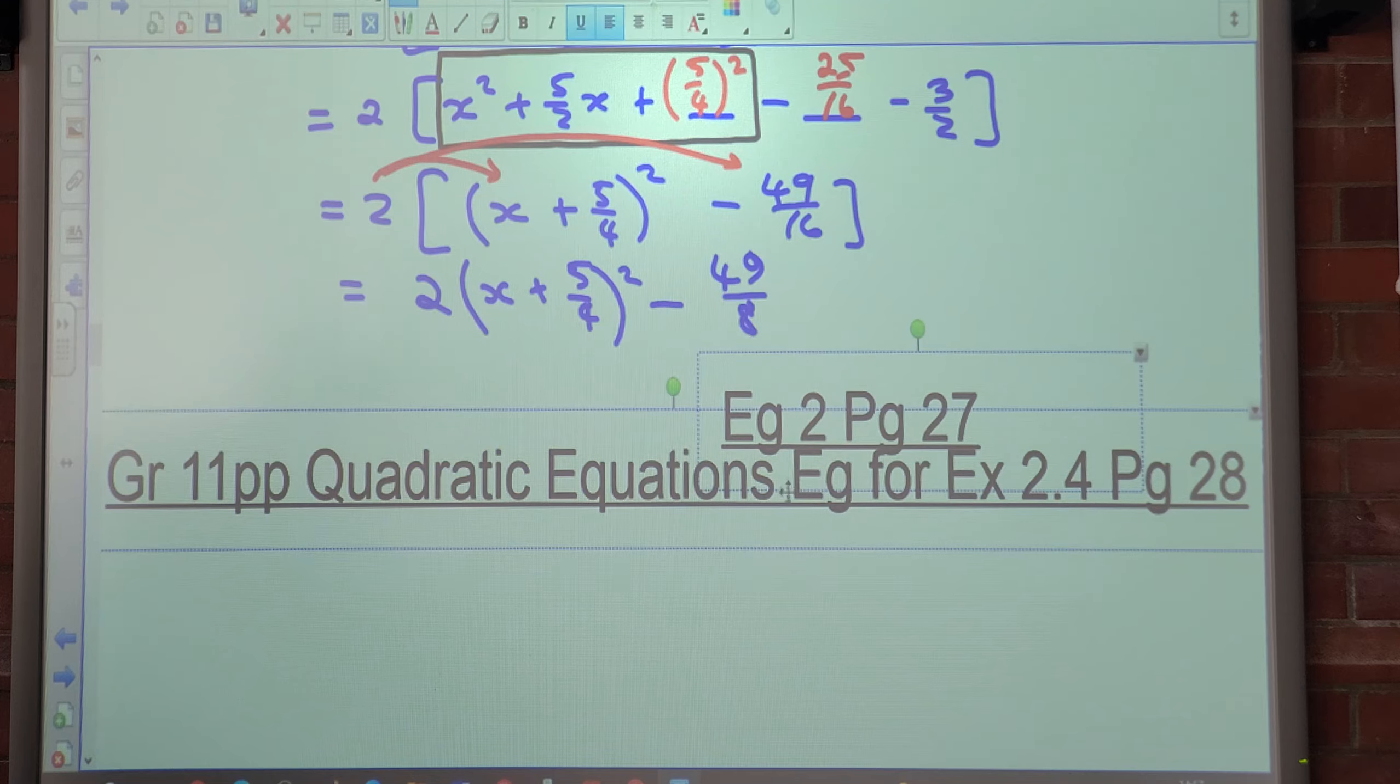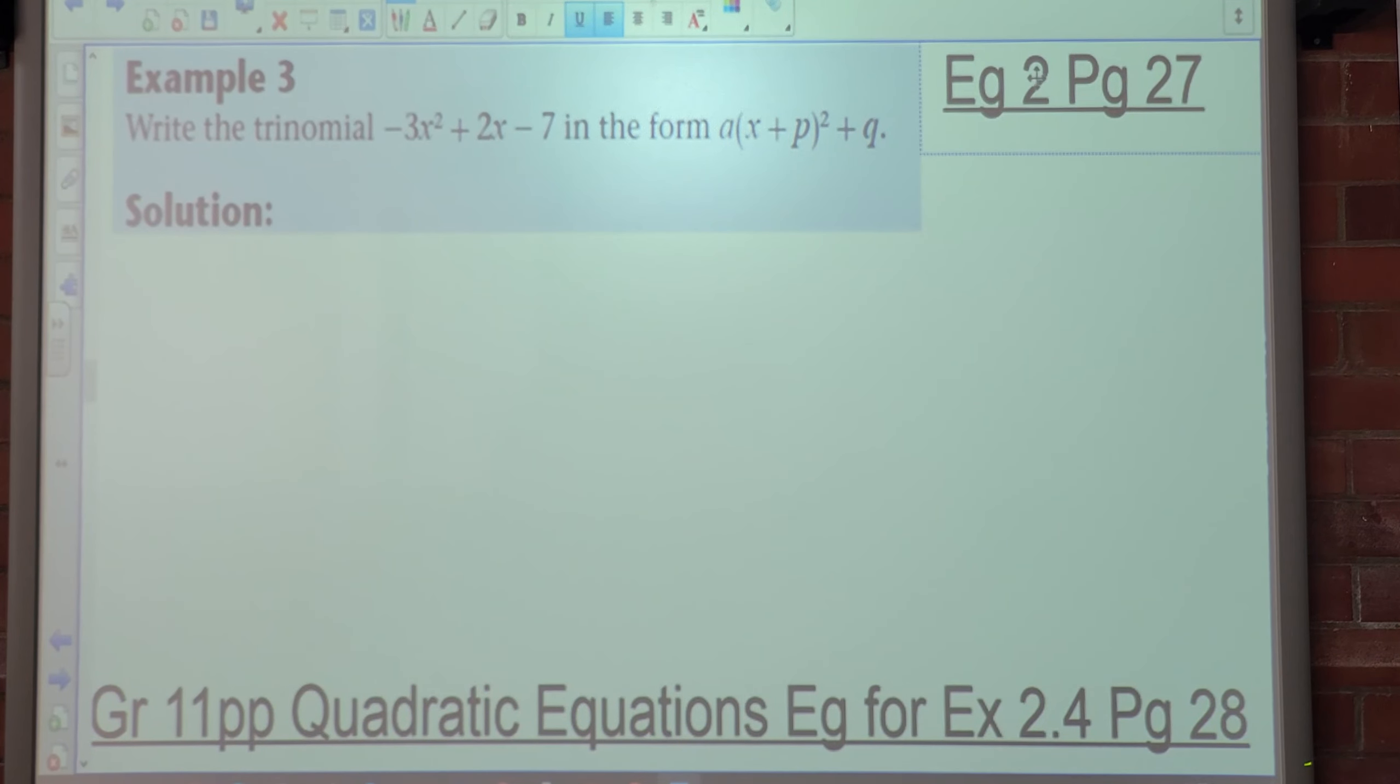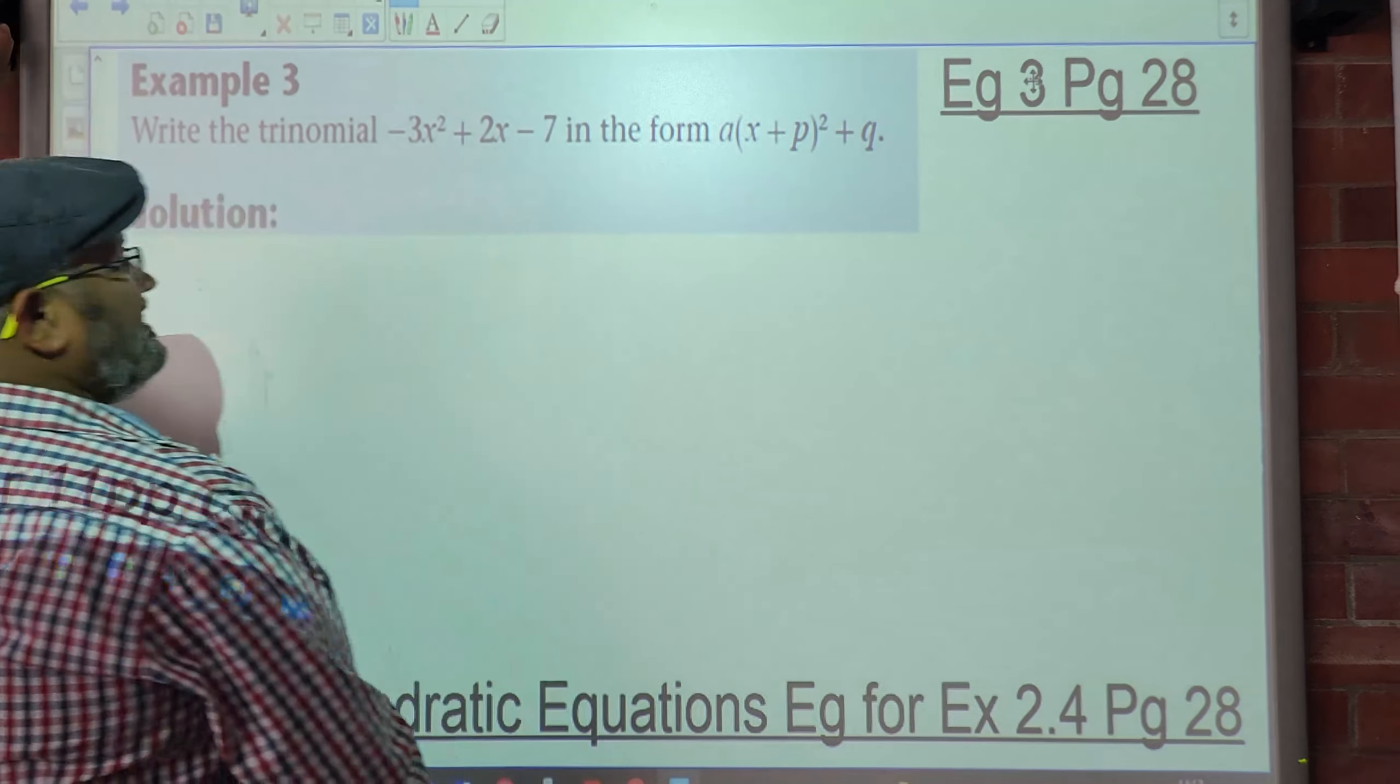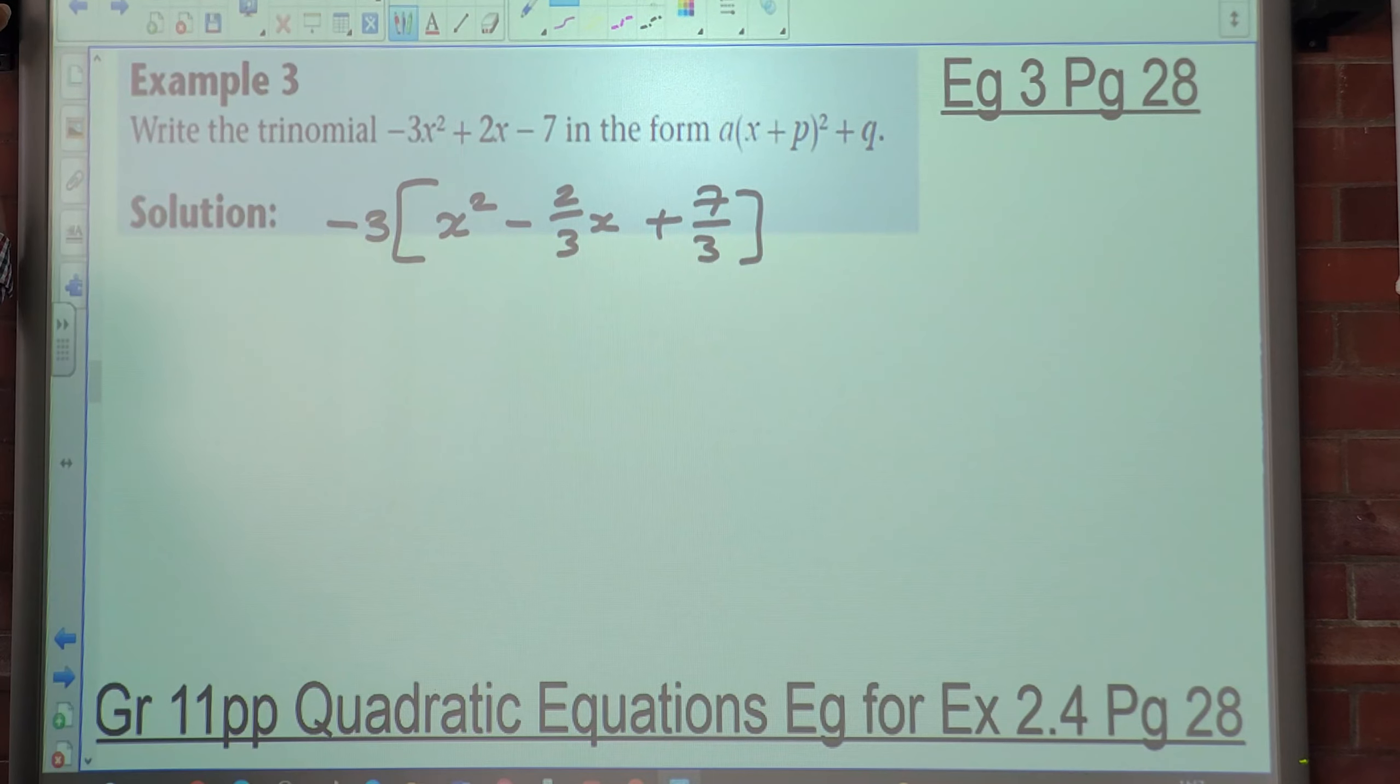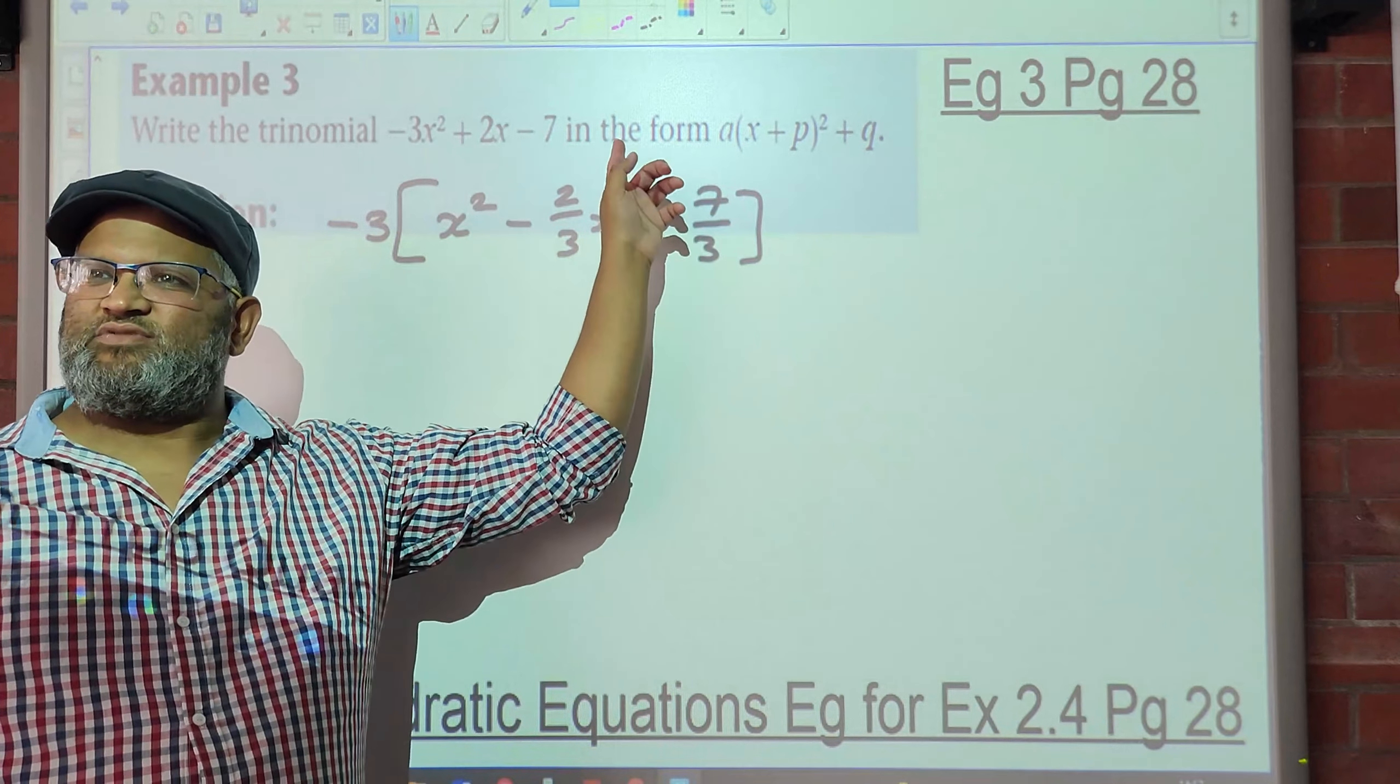Which is on page 28. Example 3 is on page 28. What do you notice here now? It's a negative in front. So you must write the trinomial -3x² + 2x - 7. So where do I start? Take out -3 as a common factor. What am I left with? x² - 2/3x plus 7/3. You all understand? Because -3 times x² is -3x². -3 times -2/3x is going to be 2x. -3 times 7/3 is -7.